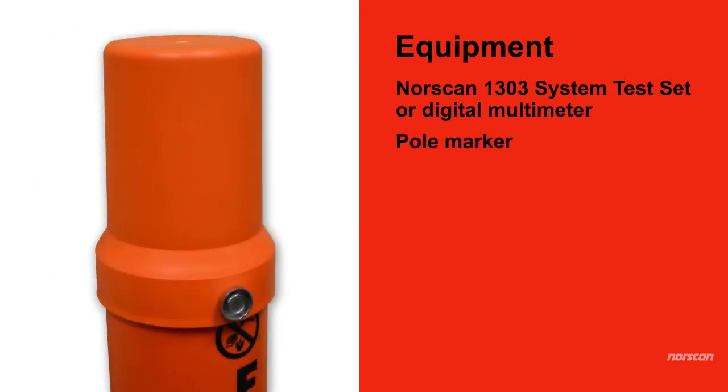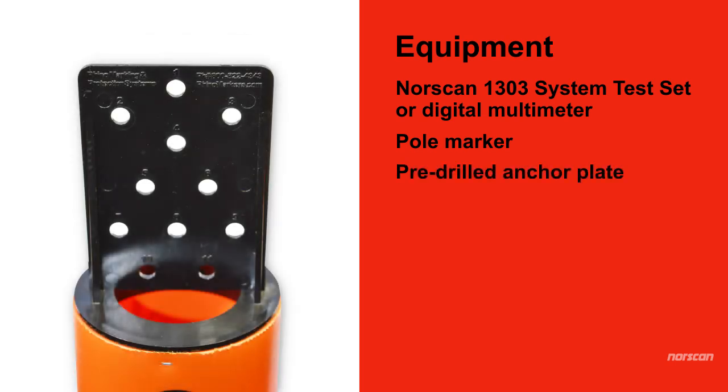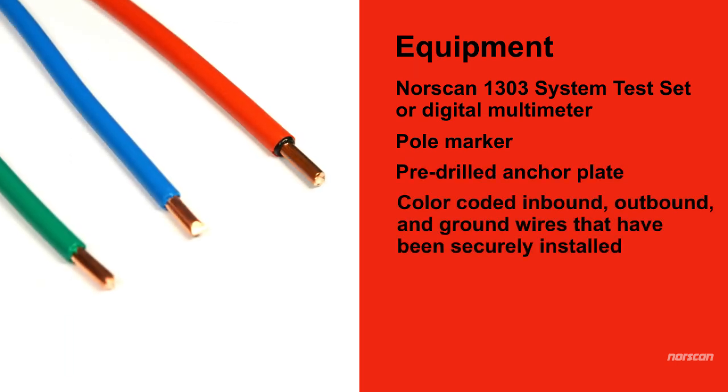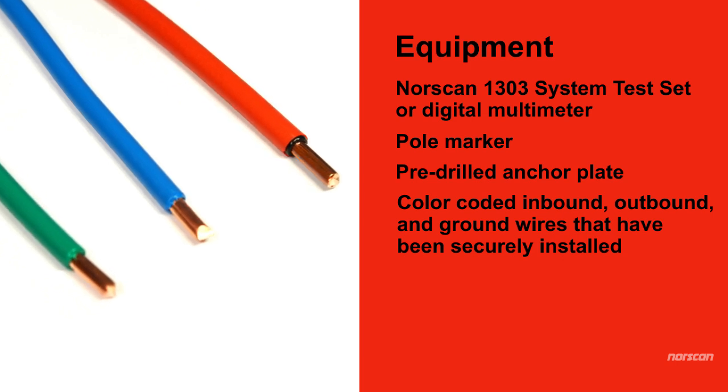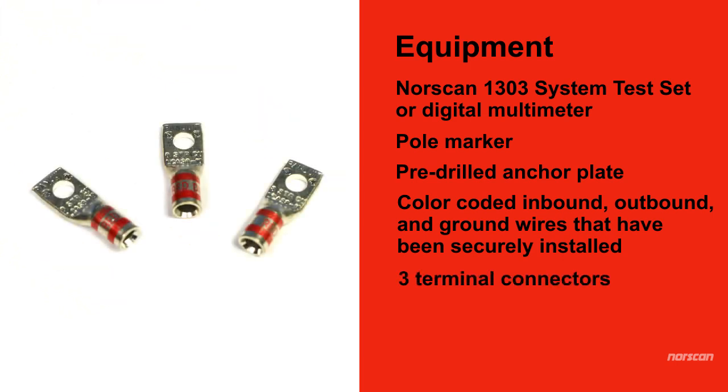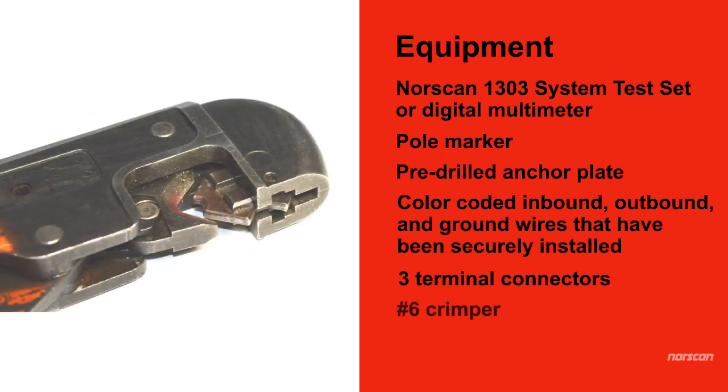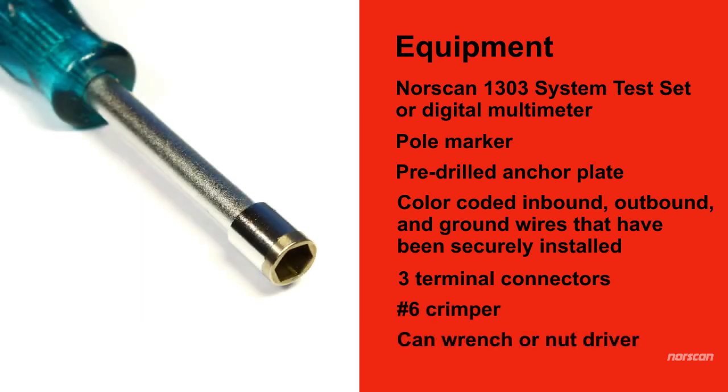a pole marker, a pre-drilled anchor plate, color-coded inbound, outbound, and ground wires that have been securely installed, three terminal connectors, a number 6 crimper, and a can wrench or nut driver.